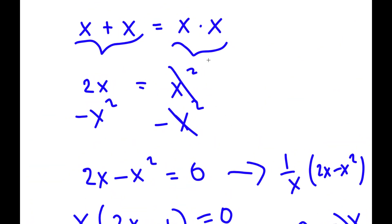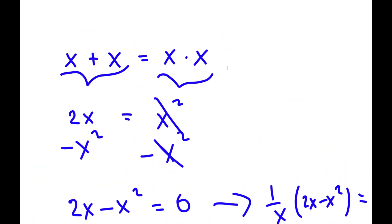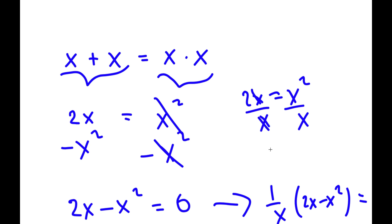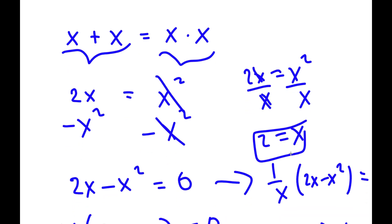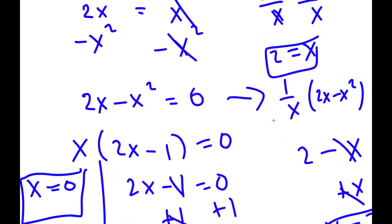An even simpler way: starting from 2x equals x squared, if I divide both sides by x, I get 2 equals x. So that's another simple way of getting the value x equals 2.